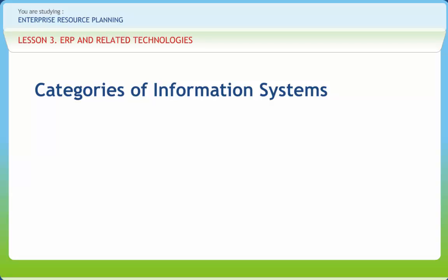There are various categories of information systems. Transaction processing systems, TPS, are designed to process routine transactions efficiently and accurately. Transaction processing systems are process oriented. There are two ways in which transaction processing systems process data: real-time processing and batch processing. Real-time processing is also known as online transaction processing. In batch processing, the information that is gathered is stored but is not processed instantly.